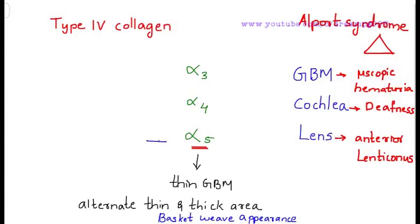The mutation in α5 subunit is the most common type of mutation and it is X-linked recessive. Mutation in α3 subunit leads to autosomal recessive type of Alport syndrome. Mutation in α4 subunit leads to autosomal dominant type of Alport syndrome. It's the least common.